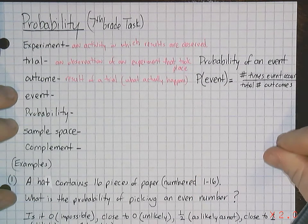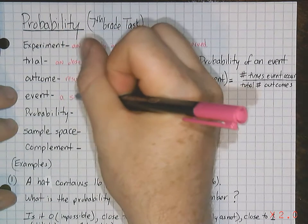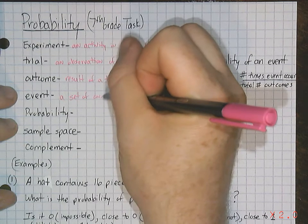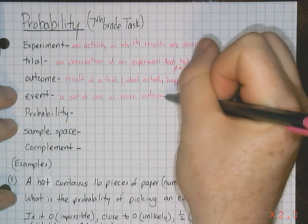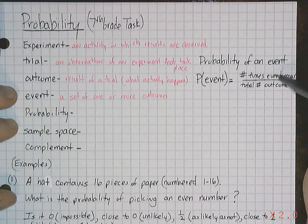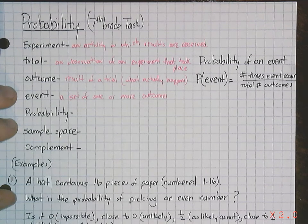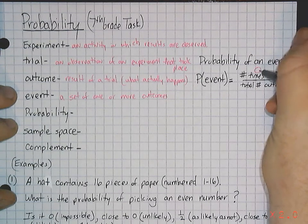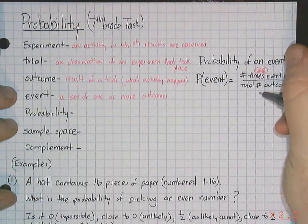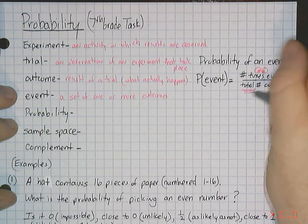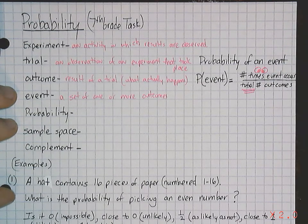Event. Event is a set of one or more outcomes. And that's what we're looking for. The probability of an event is the number of times the event occurs, what you're looking for, out of the total possible outcomes. What can possibly happen. So again, this is what you're looking for. But this is the total possibility. You want a specific outcome, but you know the total of what possibly could happen.